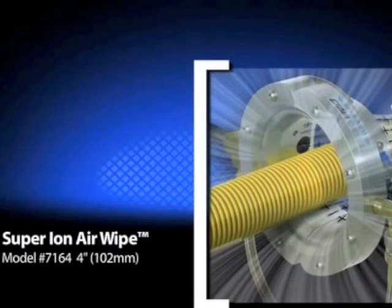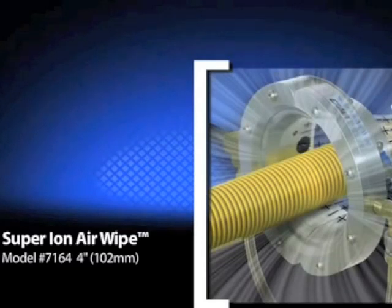X-Air super ion air wipe creates a 360 degree ring of ionized air flow that clamps around the part. It is best suited for cleaning hose, pipe, cable, extruded shapes, and anything you can think of to fit through the center.